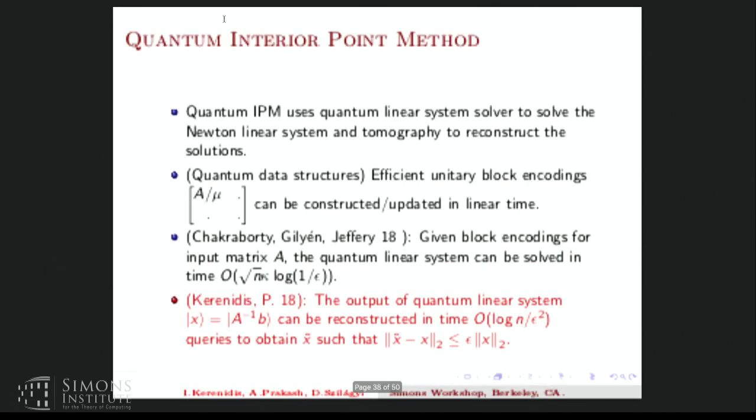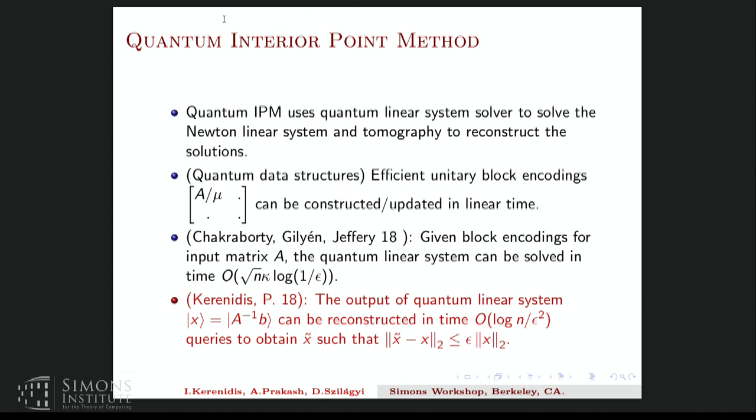And then there is this fast tomography procedure which we developed for SDP interior point methods. And that says that the output of a quantum linear system solver can be reconstructed in time log n over epsilon squared. So the time is n log n over epsilon squared for L2 norm guarantees like the ones we use here to get x hat minus x less than epsilon in L2. And log n over epsilon squared for the L-infinity guarantees. So these are the basic quantum tools that we'll be using. And I'll not delve too much into them because it's already been talked about.